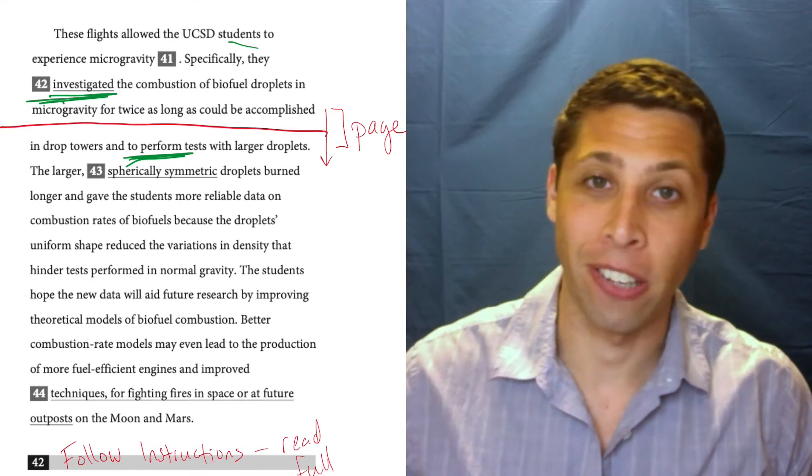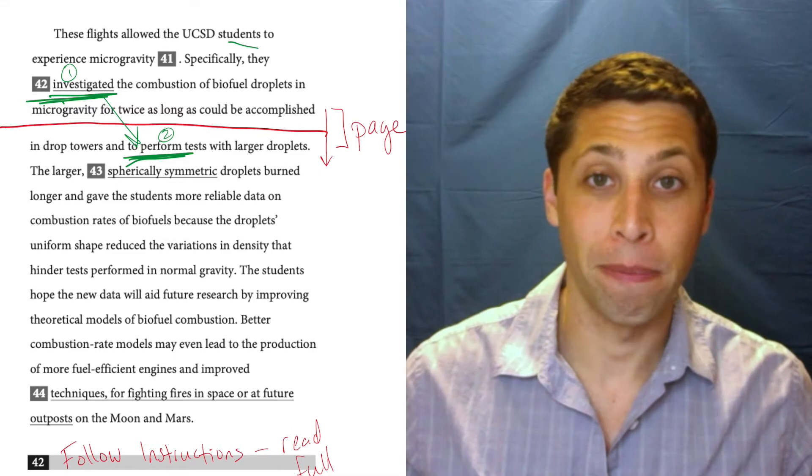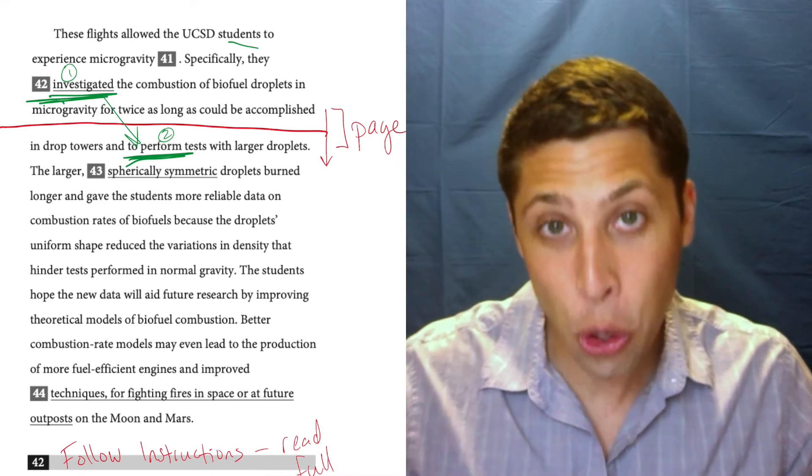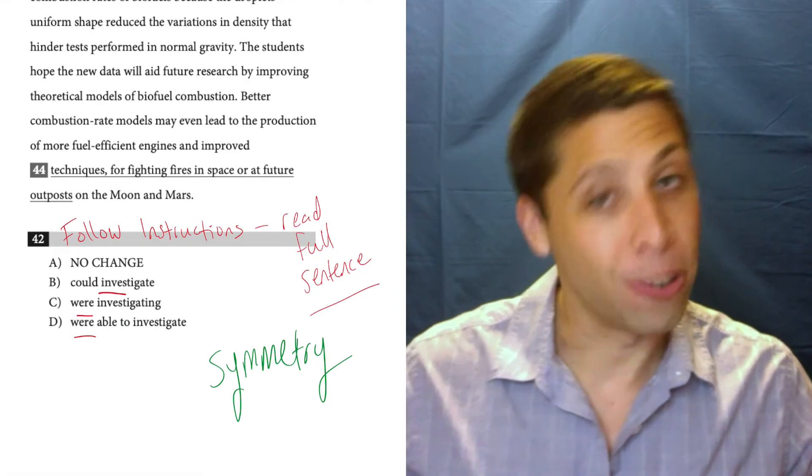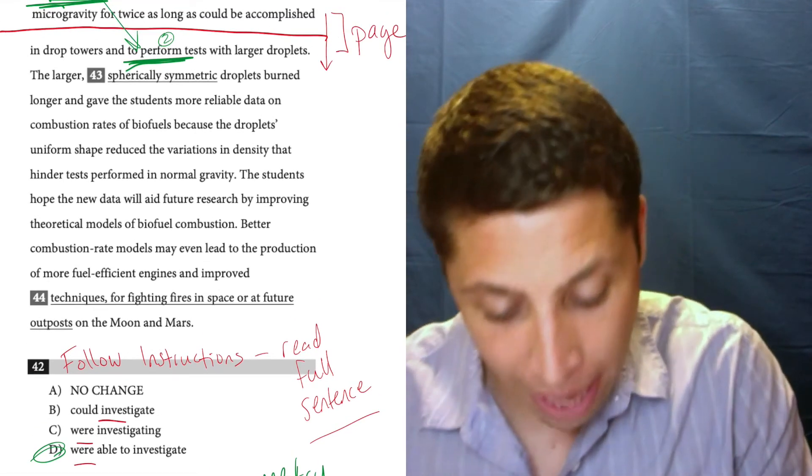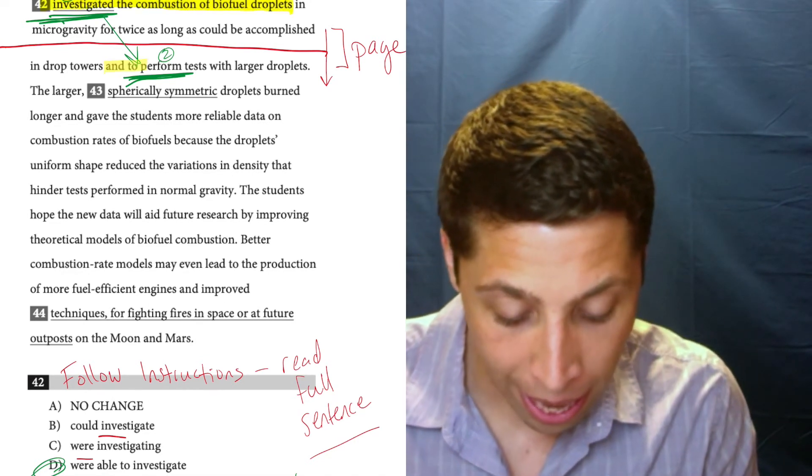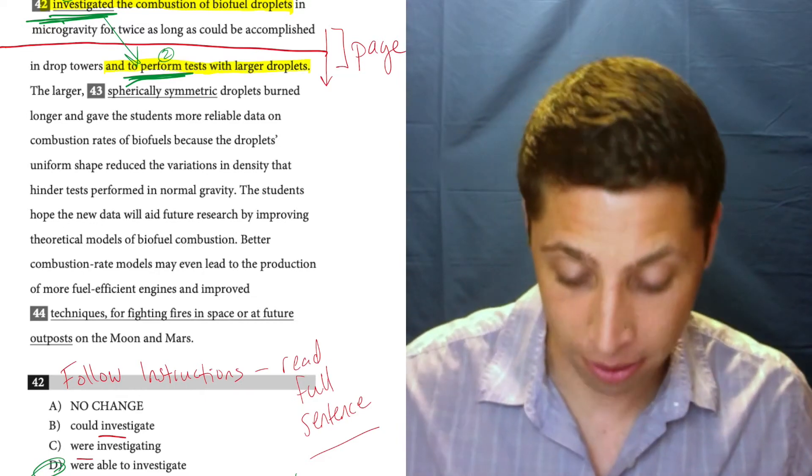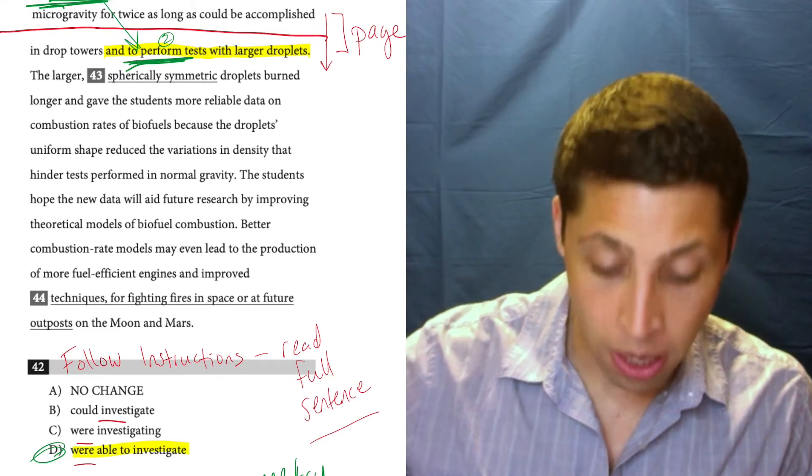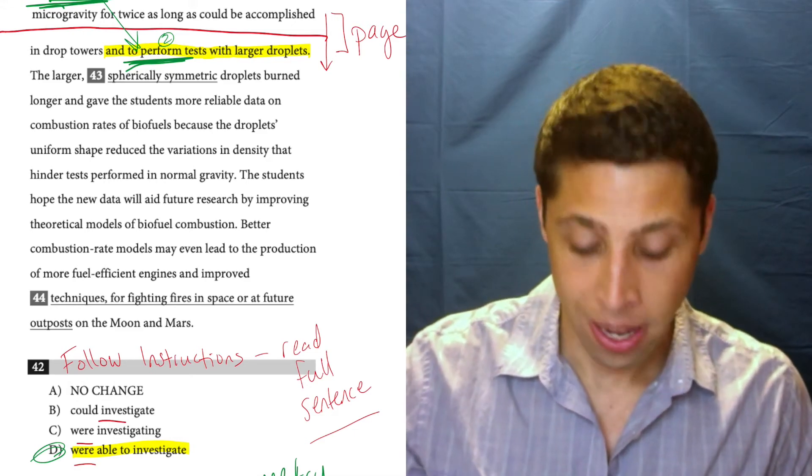So that one can't change. It's the 'investigated' that has to change. I've got to match this to this because those two things, one and two, need to be in symmetry. It's a list—it's a list of two, but it's still a list. And with symmetry, we've got to match. So I need a 'to investigate' choice, and there's only one, and it's the right answer. Let's get to the heart of the sentence: 'they blank the combustion of biofuel droplets and to perform the test with larger droplets.' They were able to investigate the combustion of biofuel droplets and to perform tests with larger droplets. Let me cut it down even further: they were able to investigate and to perform. Two things—perfect symmetry, obvious answer.